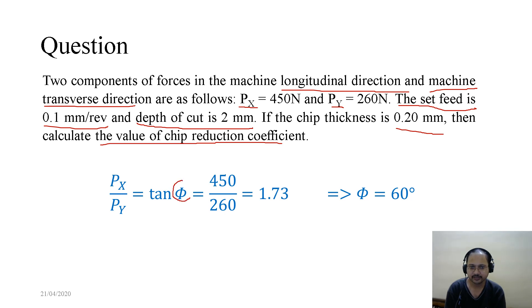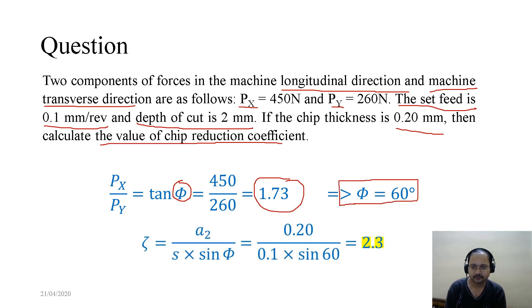We can find φ. So Px over Py equals tan φ equals 450 over 260 equals 1.73, and φ becomes 60 degrees. Now once we know φ, we know that chip reduction coefficient ζ equals a₂ over a₁ equals a₂ over s times sin φ. If we put those values, ζ equals 0.20 over 0.1 times sin 60 equals 2.3.